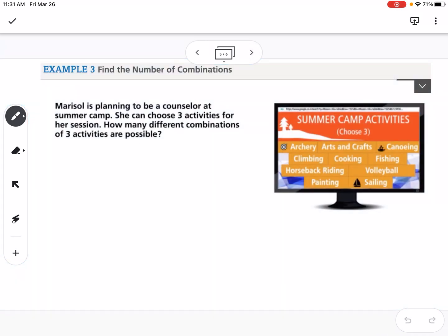The next example is talking about combinations. For combinations, order doesn't matter. Marisol is planning to be a counselor at a summer camp. She can choose three activities for her session. How many different combinations of three activities are possible?